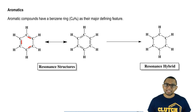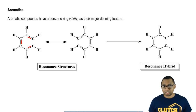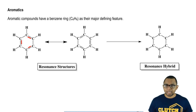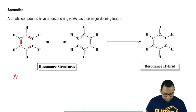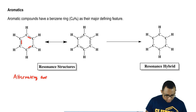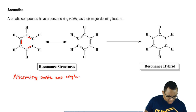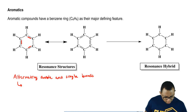These double bonds alternate — they go double bond, single bond, double bond. Alternating double and single bonds actually have a name in organic chemistry: it's called conjugation.